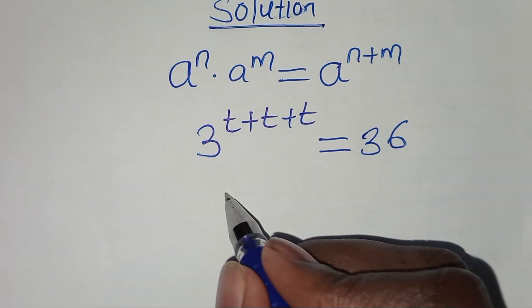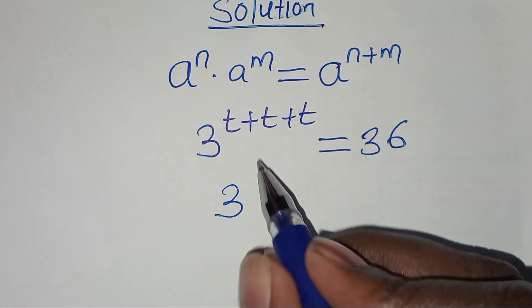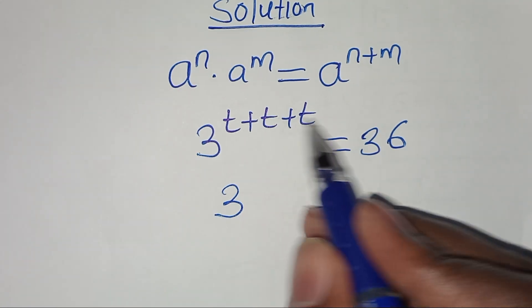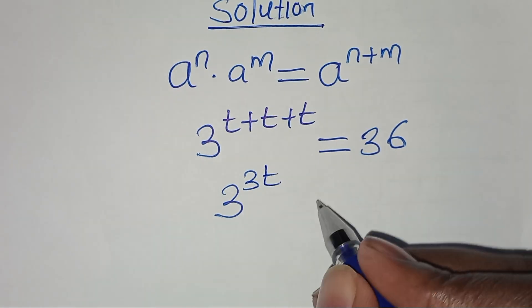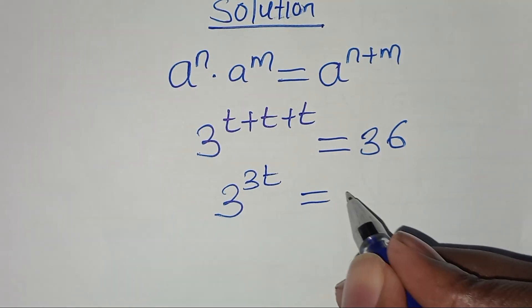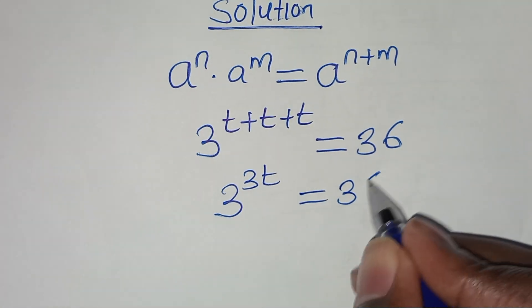This implies that we have 3 to power t plus t plus t, which is 3t, and this is equal to 36.